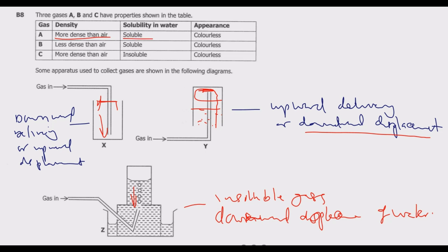Because gas A is denser than air and soluble in water, we can use apparatus X. We cannot use Z because it will dissolve and form a solution in water. So X is for gas A, which is denser and soluble. Then gas B is less dense than air, so Y is used for B.